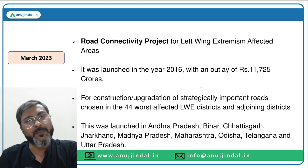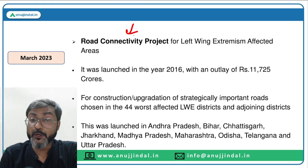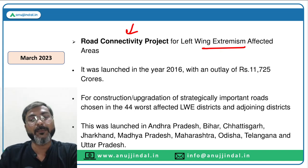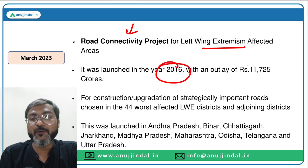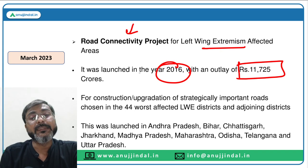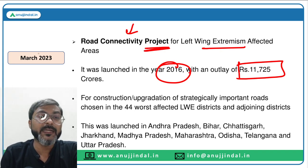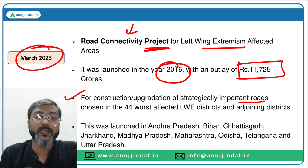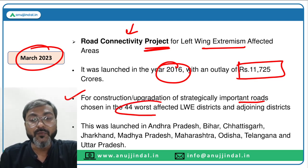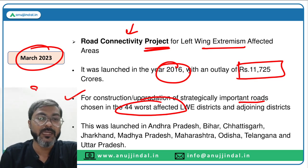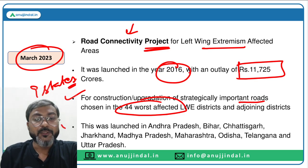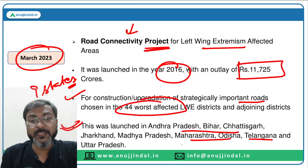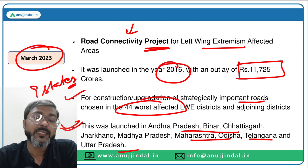There is another component under PMGSY — the Rural Road Connectivity Project for LWE (Left Wing Extremism) affected areas, i.e., Naxalite-affected areas. It was launched in 2016 with an outlay of ₹11,725 crores, targeting construction or upgradation of strategically important roads in 44 worst-affected LWE districts and adjoining districts across 9 states: Andhra Pradesh, Bihar, Chhattisgarh, Jharkhand, Madhya Pradesh, Maharashtra, Odisha, Telangana and Uttar Pradesh. The target is to complete projects by March 2023.